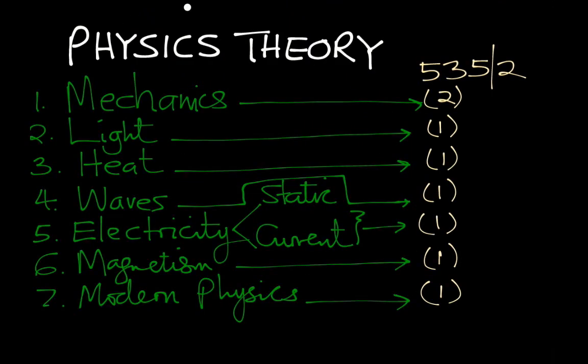Now the physics theory consists of seven branches. We have mechanics, light, heat, waves, electricity split into static electricity or electrostatics and current electricity, then we have magnetism and electromagnetism, and finally we have modern physics. I've already covered modern physics and current electricity and part of the waves on my YouTube channel. Please check out for those videos.